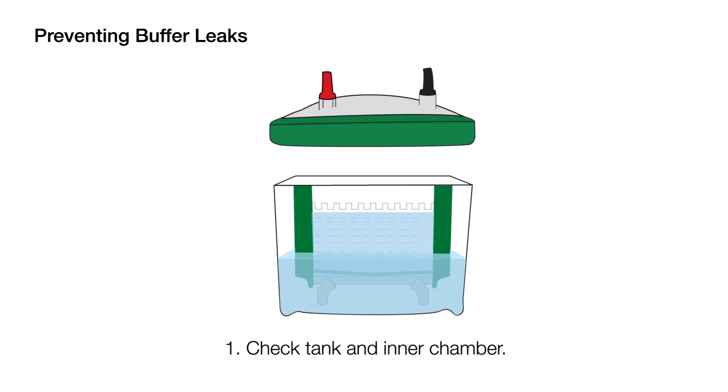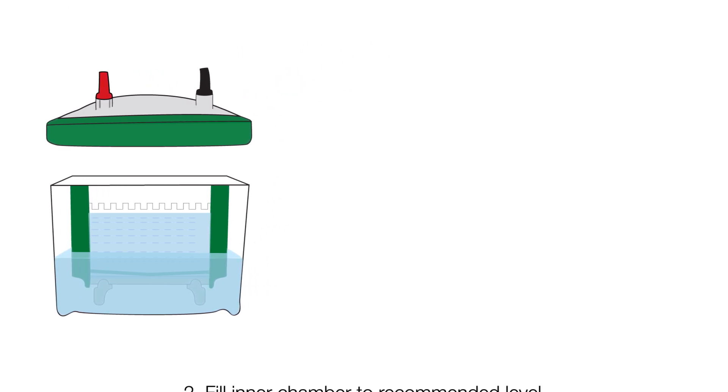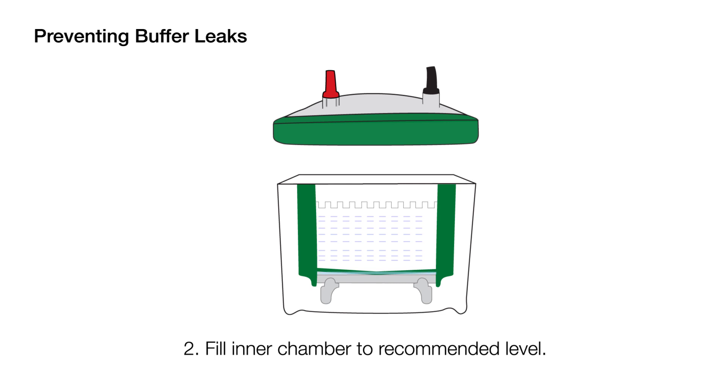Slow leaks in the inner buffer chamber, also called the upper chamber, are a particularly common issue. Always fill the inner buffer chamber to the recommended level to ensure even sample migration through the gel.